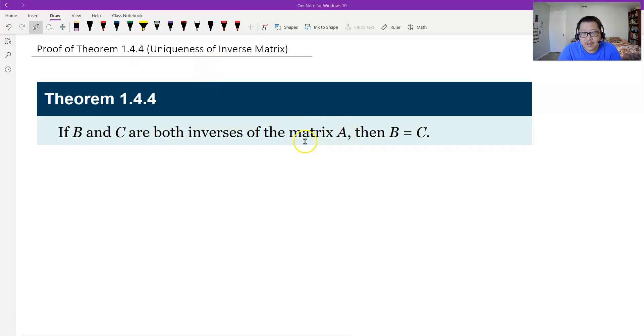If square matrix A is invertible, and two matrices B and C are both inverses of A, then we can prove that B and C are equal to each other. Let's see why.